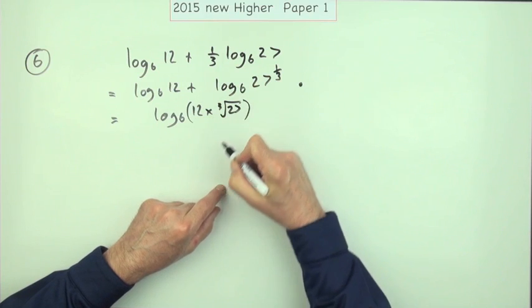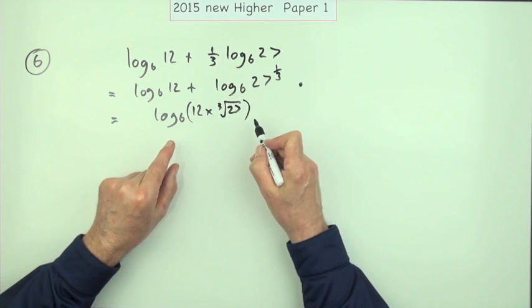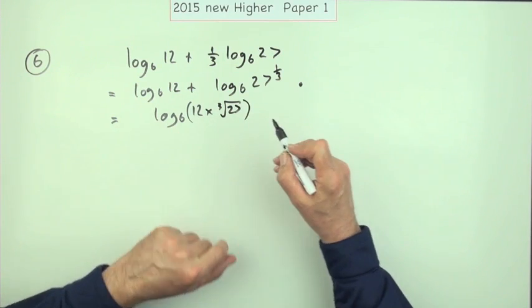root of 27, whatever way you like. The main thing is you've turned it into a single logarithm of the product.